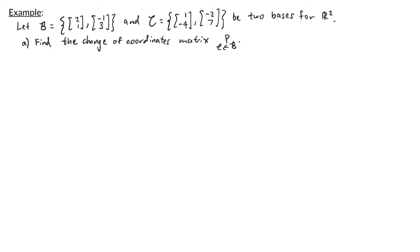In this example we have two bases for R2. Basis B consists of vectors (2, 1) and (-1, 3), and basis C consists of vectors (1, -4) and (-2, 7). Part a asks us to find the change of coordinates matrix P from B to C. To do that, we make the augmented matrix with the C vectors on the left and the B vectors on the right: [1, -2 | 2, -1; -4, 7 | 1, 3].